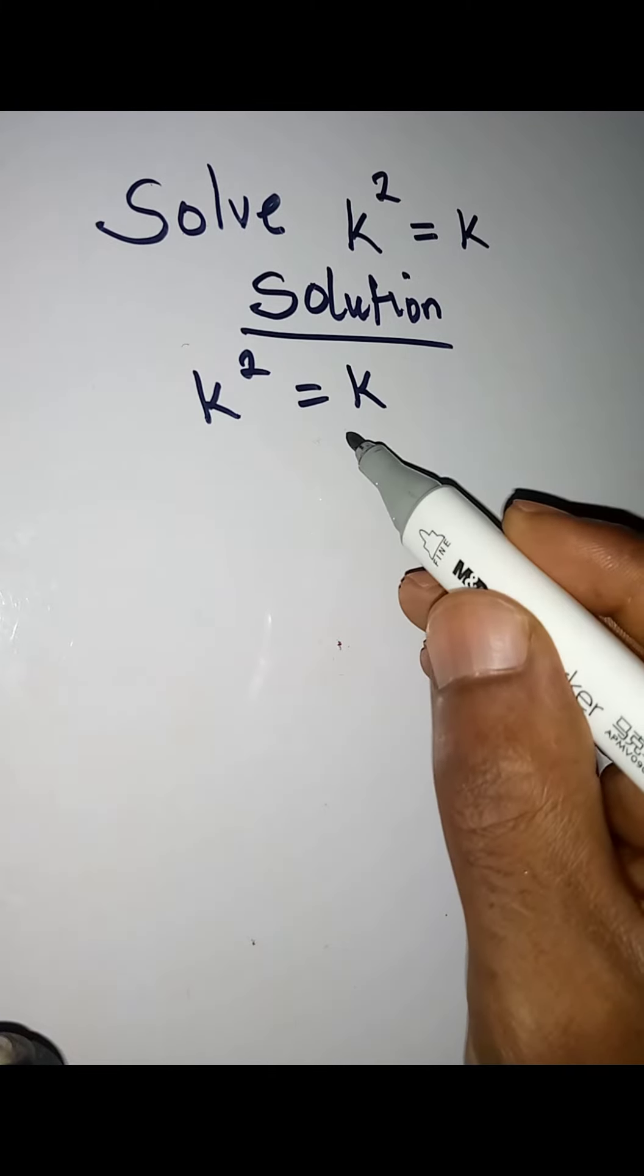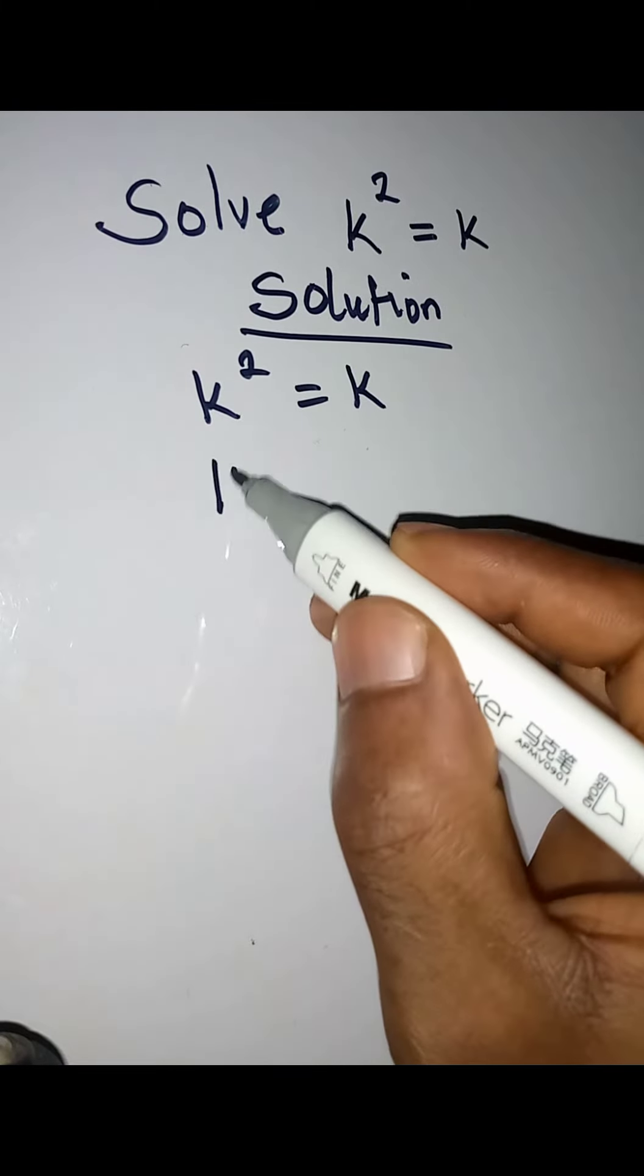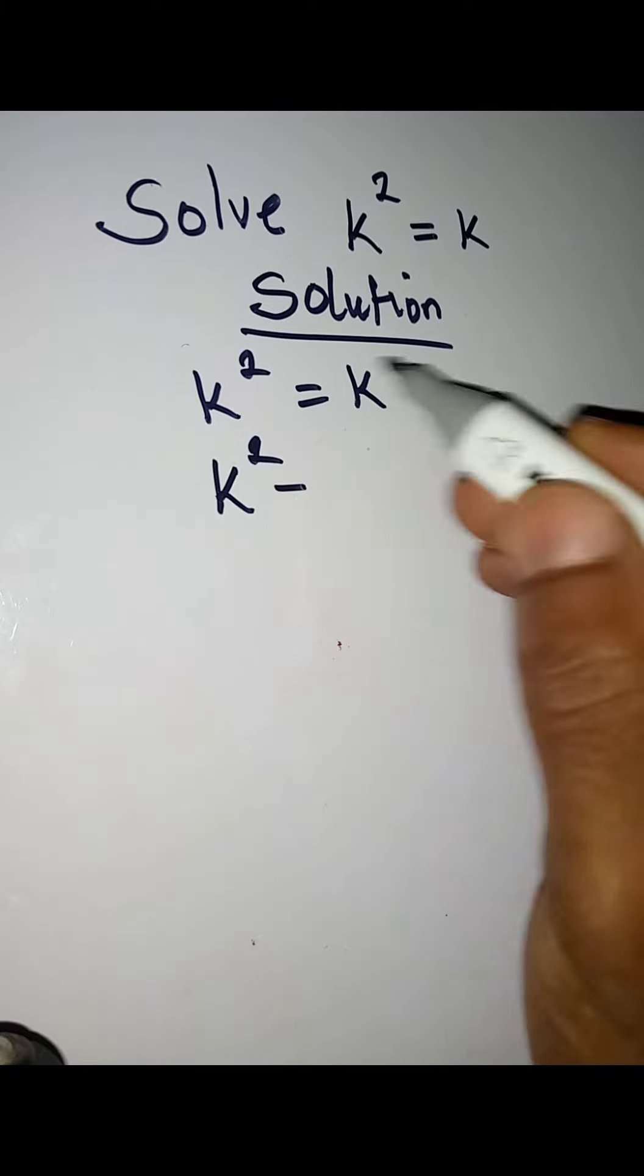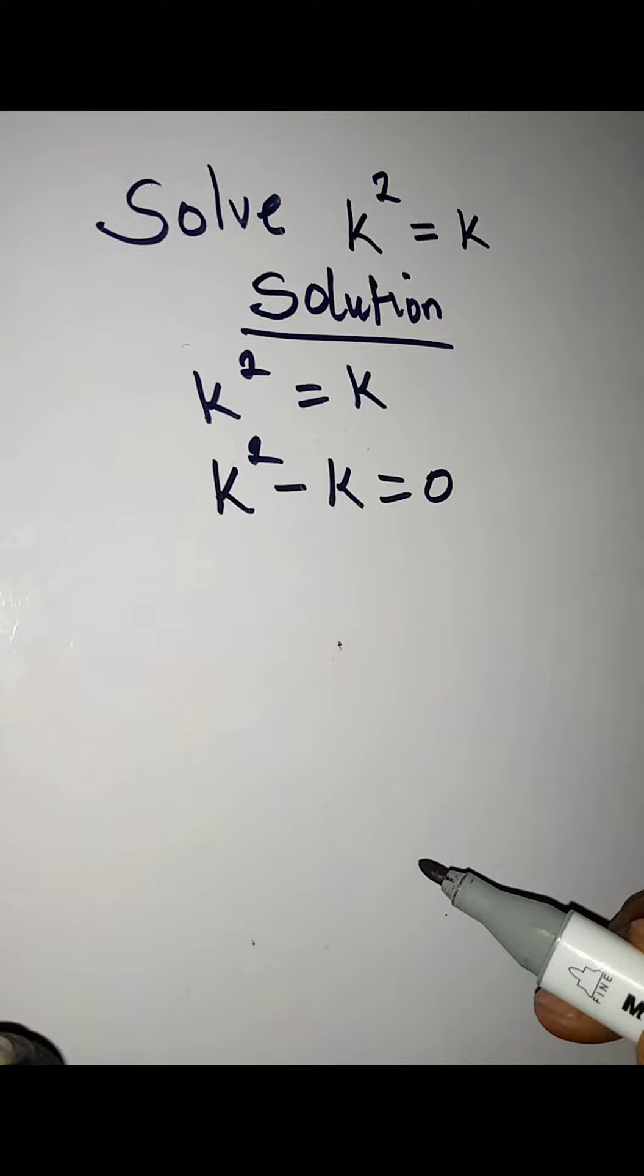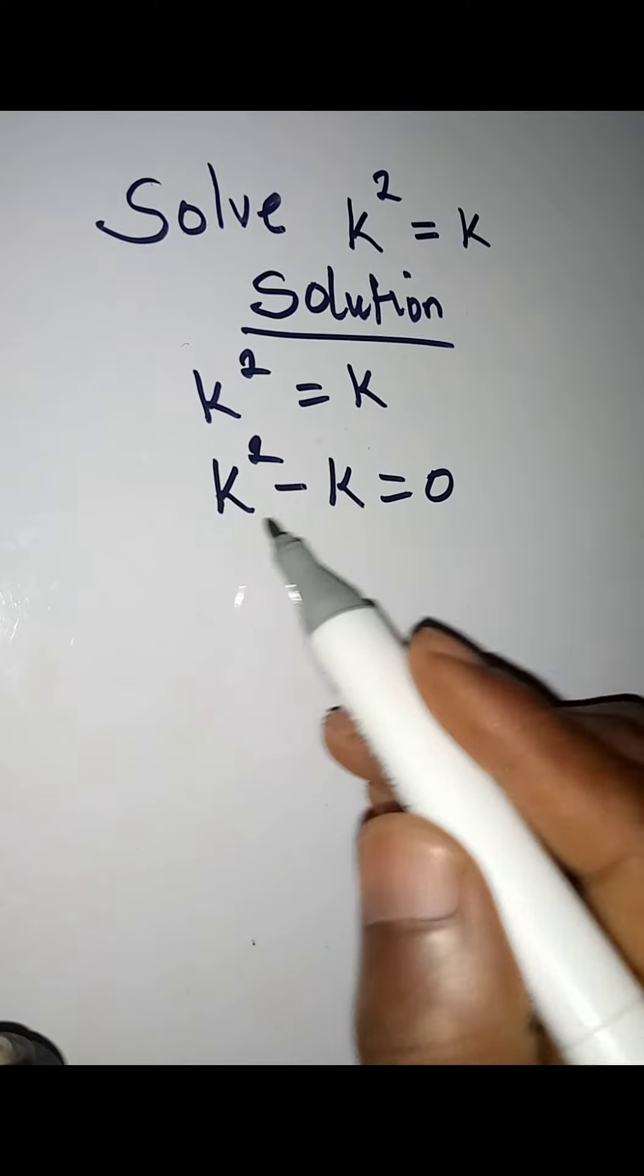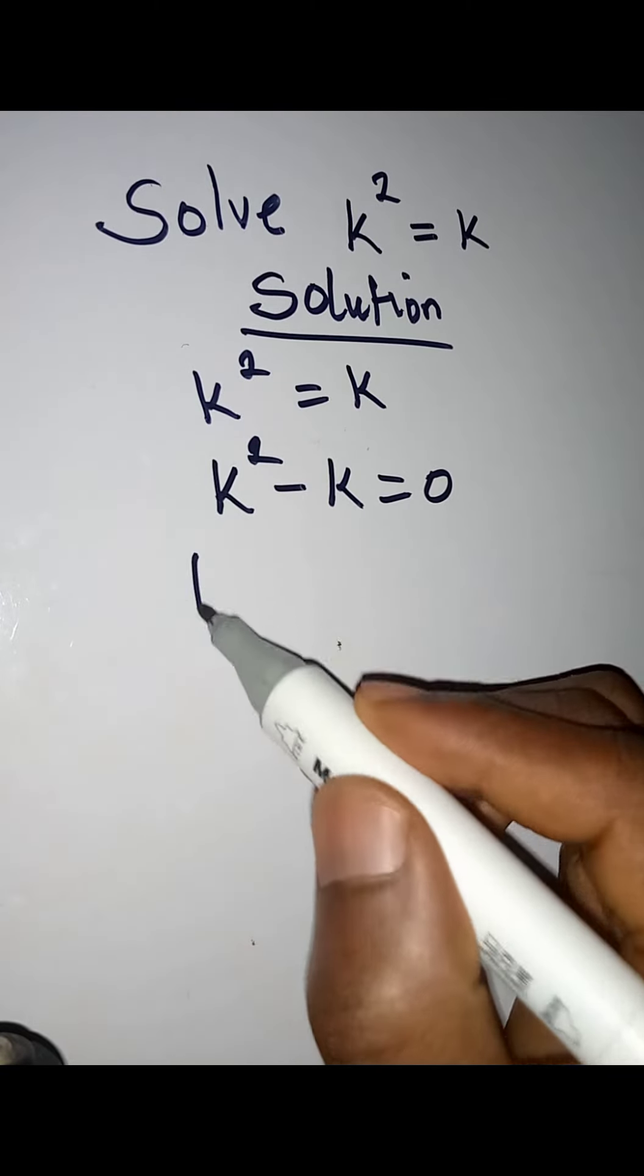We will collect like terms, so we have k² minus k equals zero. From here we can apply the factorization method because we have something common to these two terms, and that is k.